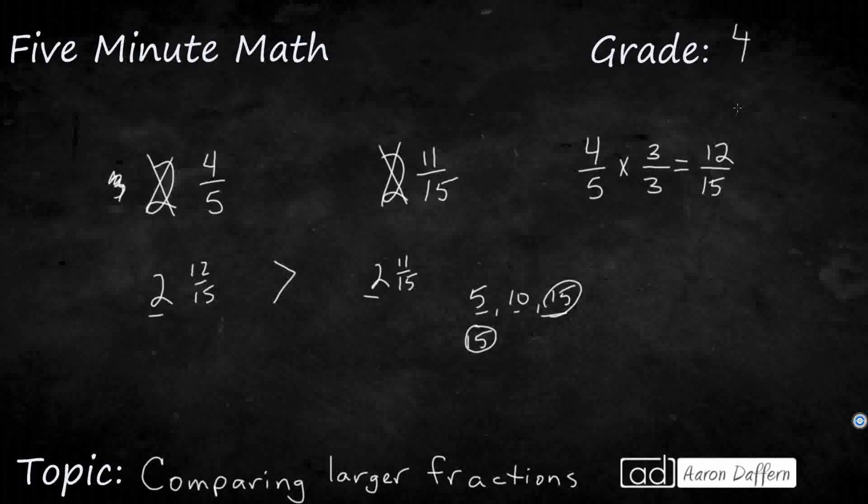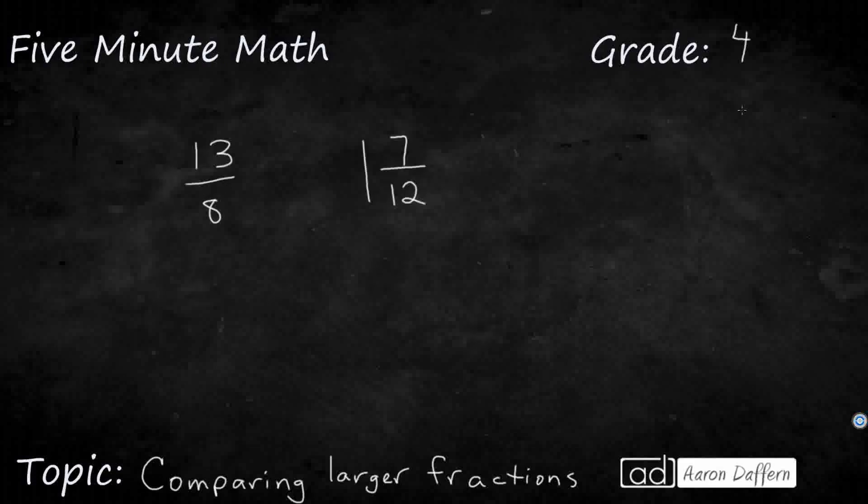Let's look at a different example. So what if I need to compare thirteen eighths and one and seven twelfths? So you have an improper fraction on the left, a mixed number on the right. Well, the first thing I would do is I would make them both look the same. Either make them both improper fractions or both mixed numbers. In this case we'll make them both improper fractions. So I just want to change this and make this look like an improper fraction.